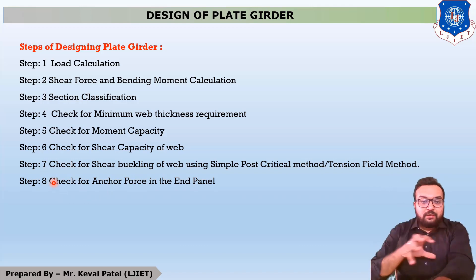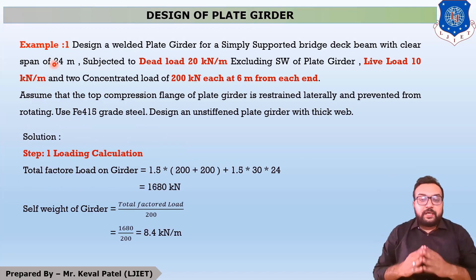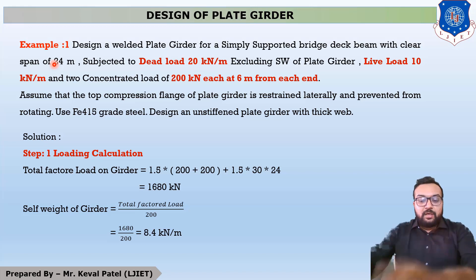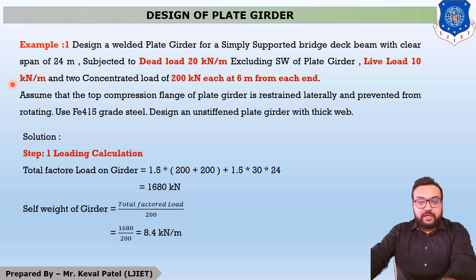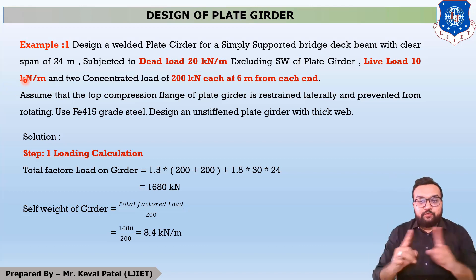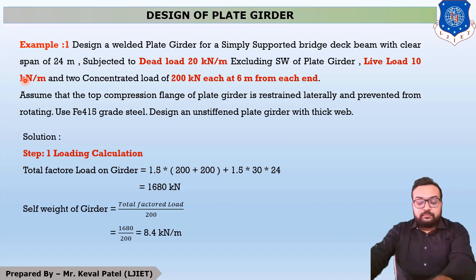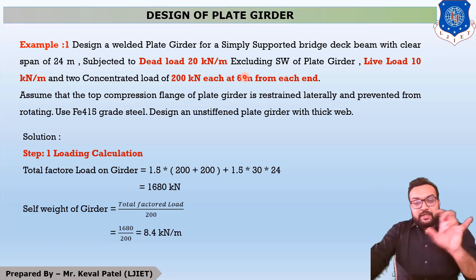After discussing all the design steps, let us move to example number one: the design of a welded plate girder. Design a welded plate girder for a simply supported bridge deck with a clear span of 24 meters. The plate girder is subjected to a dead load of 20 kN/m and a live load of 10 kN/m, excluding the self-weight of the plate girder.